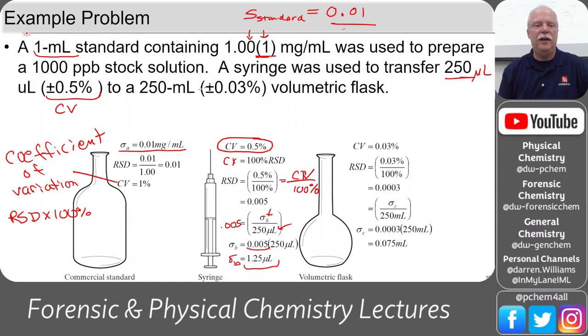And then the volumetric. So this syringe value was put into a 250 mL volumetric. Again, another percentage, CV. So we do the same thing. Here's our CV. We divide by 100% to get the RSD, and then we multiply that RSD by the value, 250 milliliters, and we get our uncertainty. So sigma C is 0.075 milliliters. So now we have all of our uncertainties and our values, and we can do the calculation.